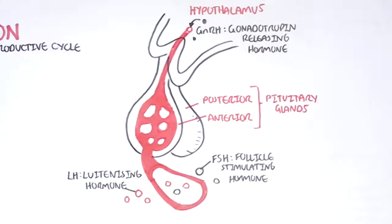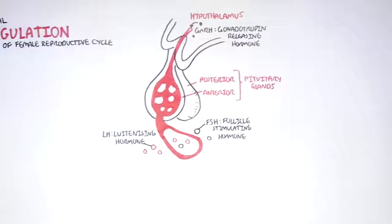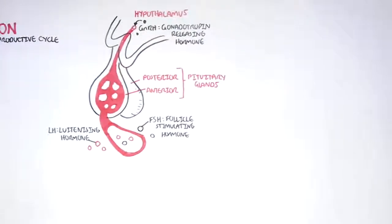Note that in males, this same process also occurs. Males also produce gonadotropin-releasing hormone, which causes the anterior pituitary to release luteinizing hormone and follicle-stimulating hormone. So what will these hormones do in the female body?